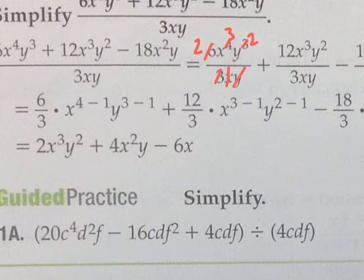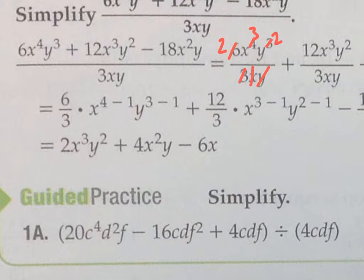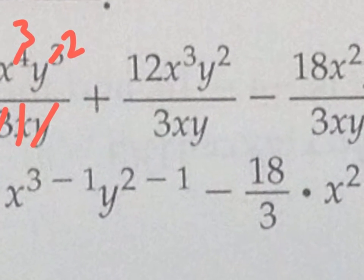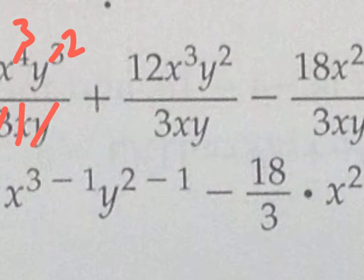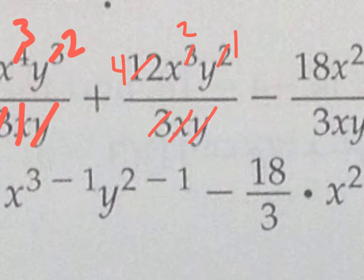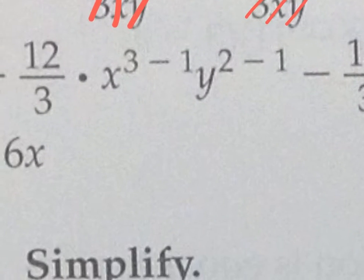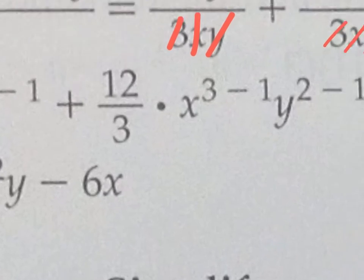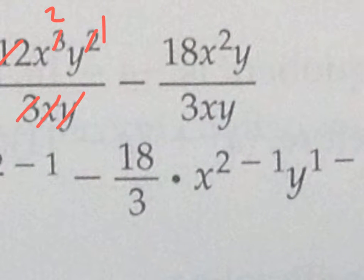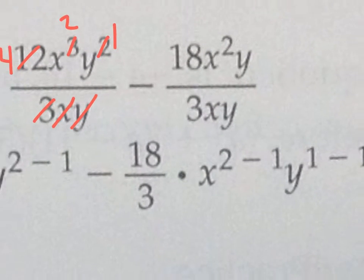So your first answer is going to have a 2, an x to the third, and a y to the second. If you look at the answer, it is 2x to the third, y to the second. So instead of moving exponents and making them negative, I just cancel or subtract. 12 divided by 3 is 4 left on top. The x cancels leaving two x's, the y cancels leaving one y. So the second part of your answer is 4x to the second y. And likewise, when you cancel all these out, you get the third answer. I hope that clarifies it.